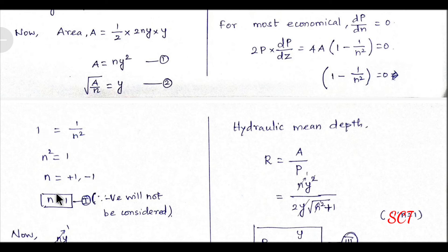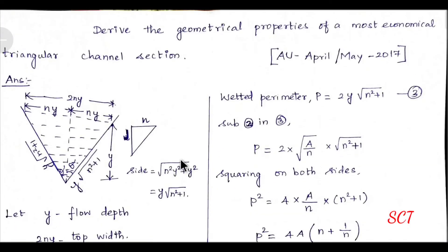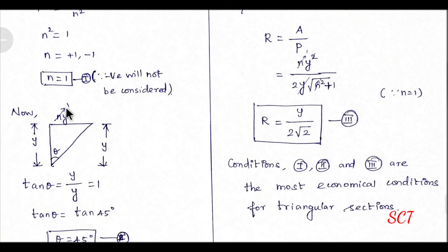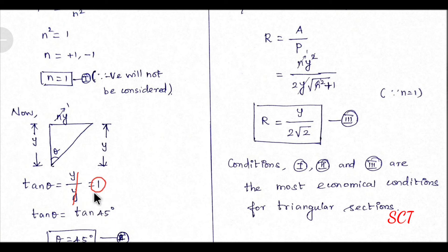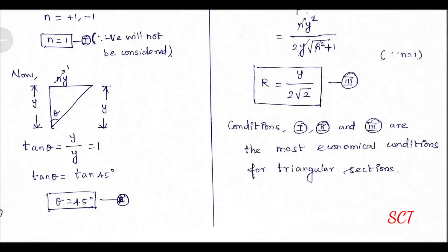Solving n² = 1 gives n = ±1. We take the positive value since n is a physical side slope, so n = 1. Now, tan θ = opposite/adjacent = ny/y = n = 1. Since tan 45° = 1, we get θ = 45°. So the first condition is n = 1 and the second condition is θ = 45°.